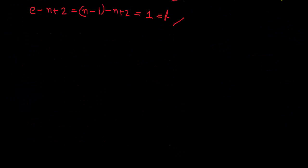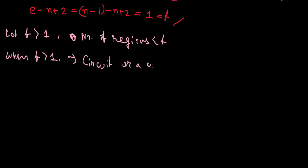Now we'll see for other things. Let us assume our result holds for f greater than 1, number of regions less than f. When f is greater than 1, then there must be a circuit, so this implies a circuit or cycle must be present.